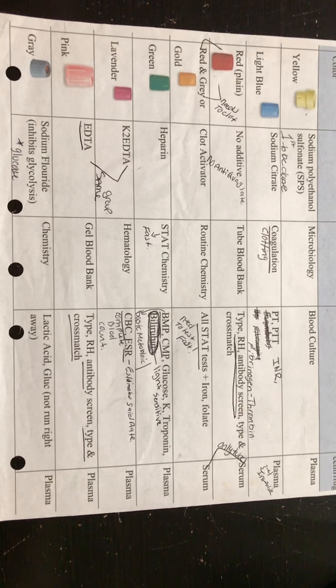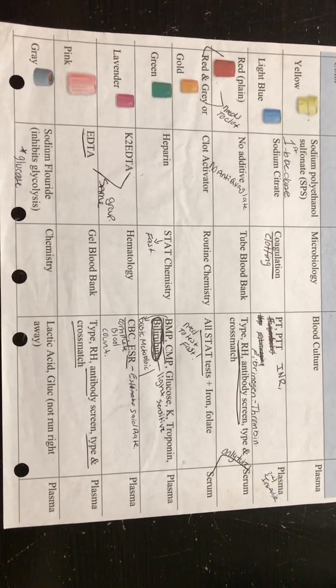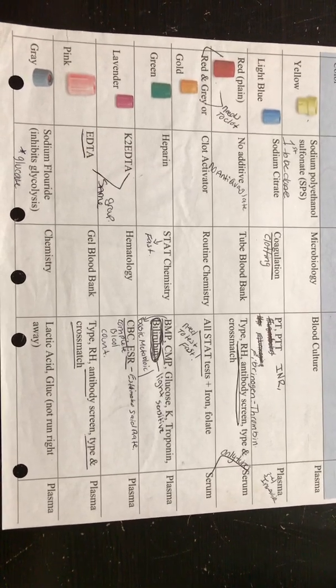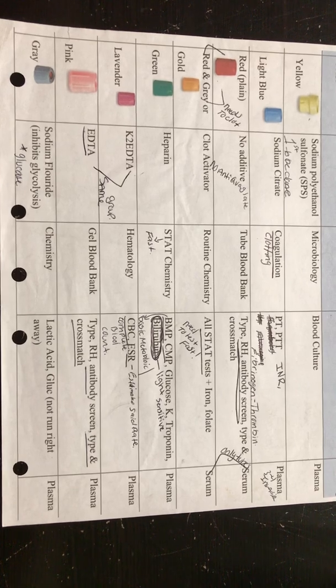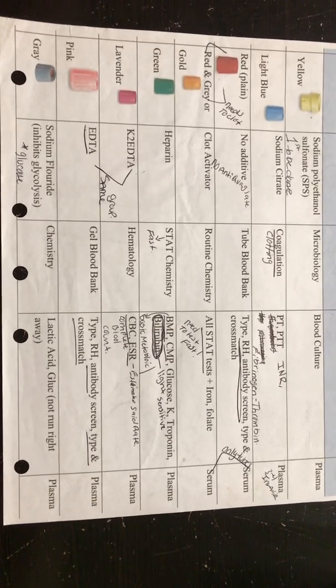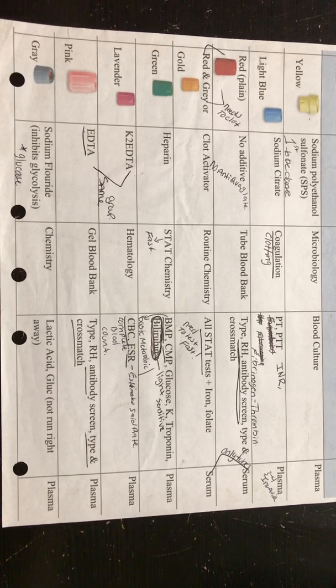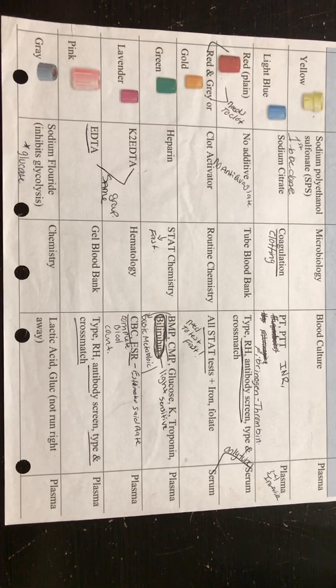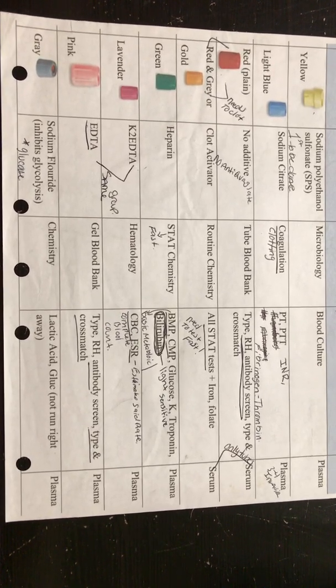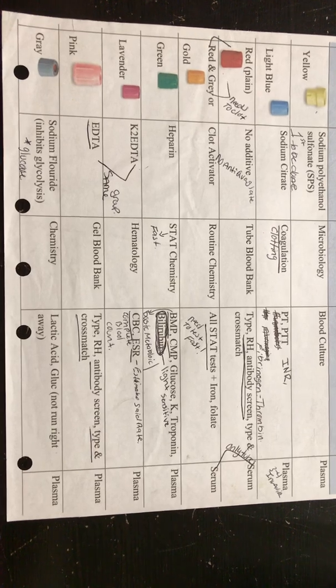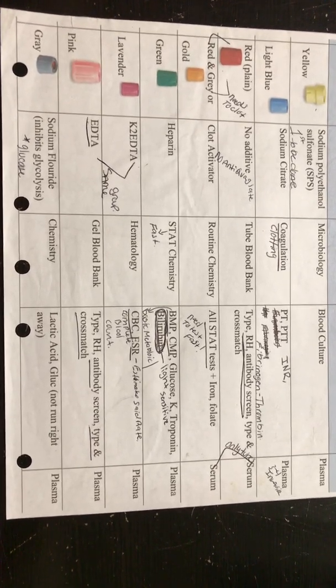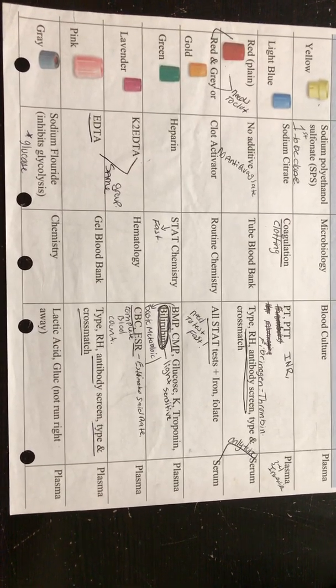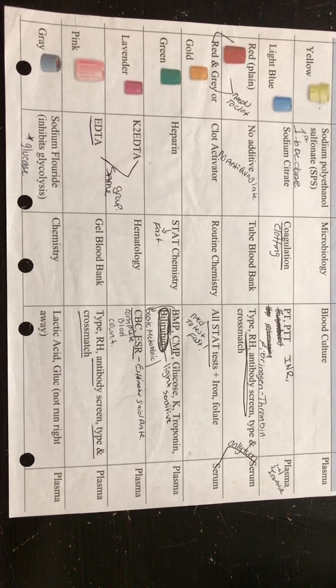Then we have our green heparin green. Your green has your heparin in it. That has your BMP and CMP in it. Your BMP is your basic metabolic profile, and CMP is complete metabolic profile. So your metabolic profiles will go in a green tube along with troponin.